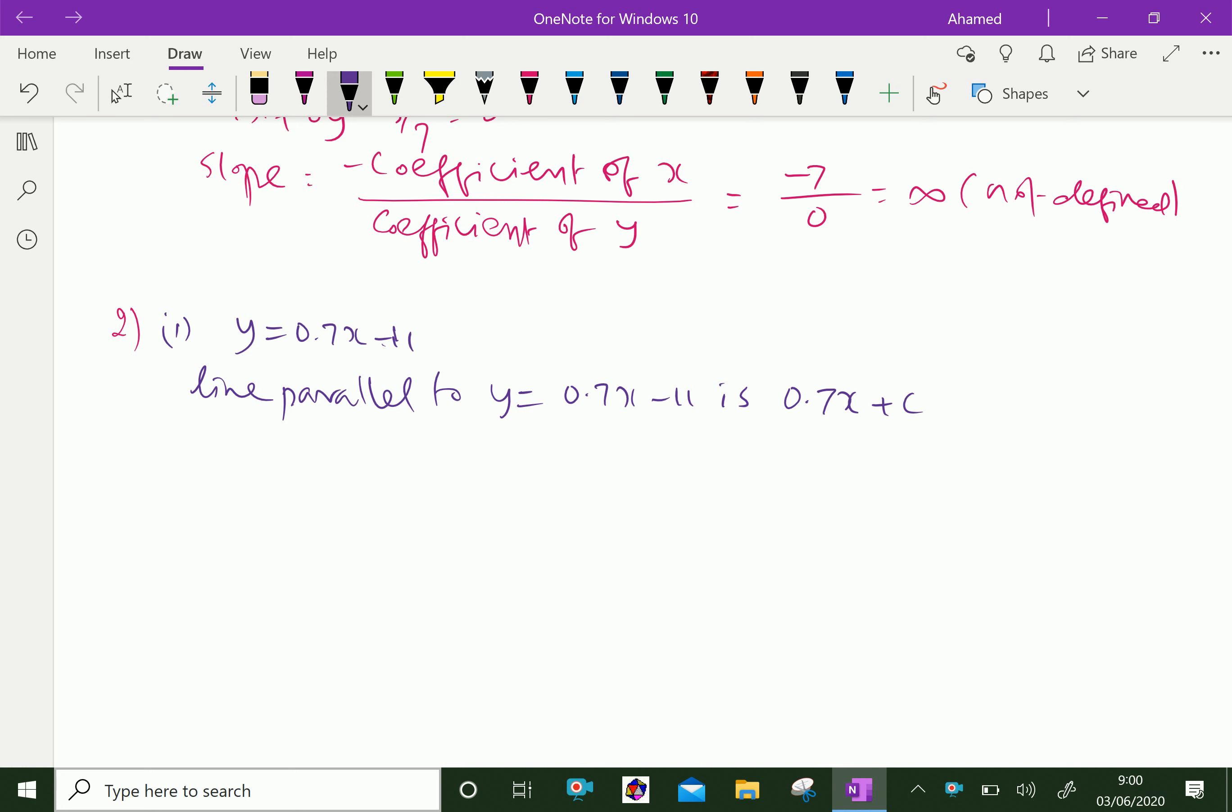If the lines are parallel, the slopes are equal. Therefore, slope = 0.7.